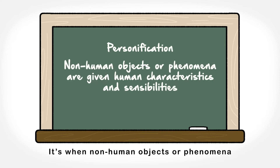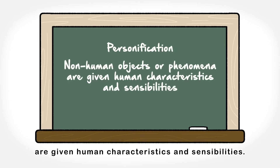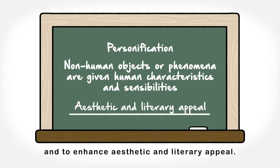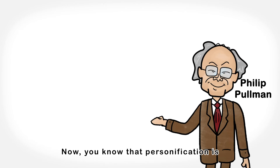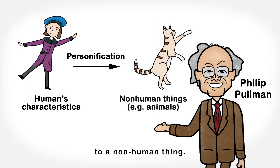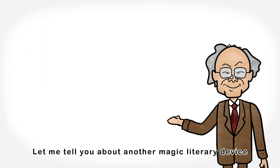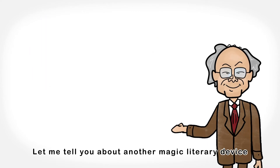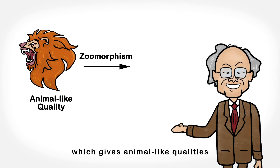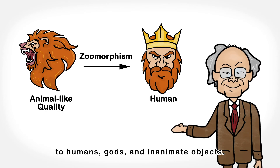It's when non-human objects or phenomena are given human characteristics and sensibilities. Personification is used in literature to add more meaning beyond the literal and to enhance aesthetic and literary appeal. Now, zoomorphism gives animal-like qualities to humans, gods and inanimate objects.